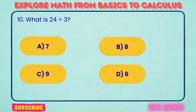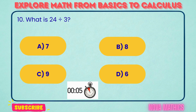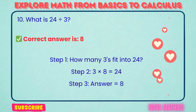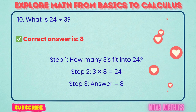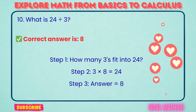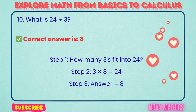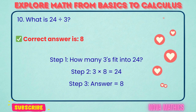10. What is 24 divided by 3? Correct answer is 8. 24 divided by 3 equals 8. We find this because 3 times 8 is 24.